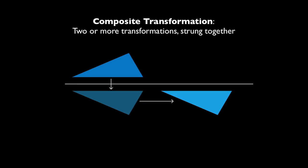And then you can compose transformations. If you string together two or more transformations, then you create what's called a composite transformation. Here we start at the triangle on the top, we reflect over the horizontal line, and then translate to the right, so the end product is kind of a glide transformation.